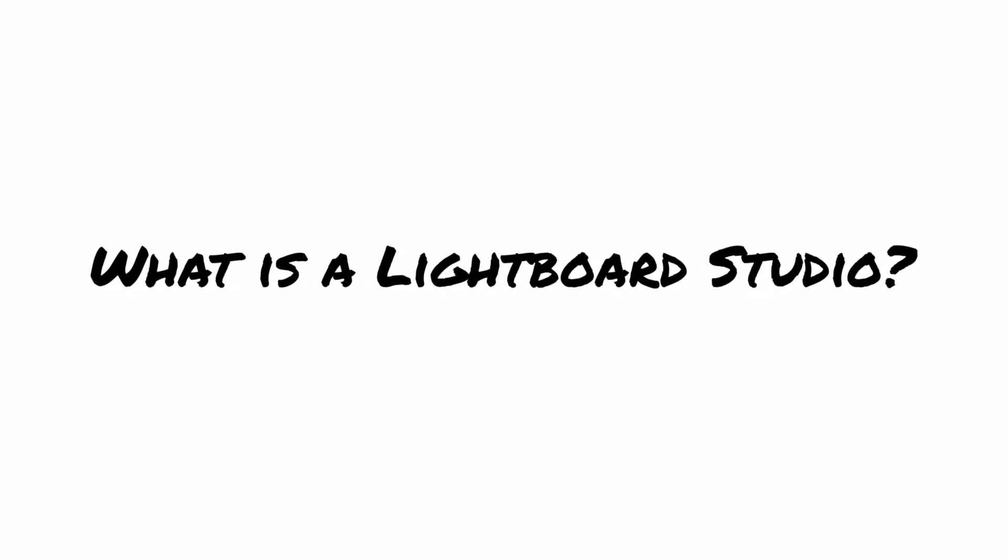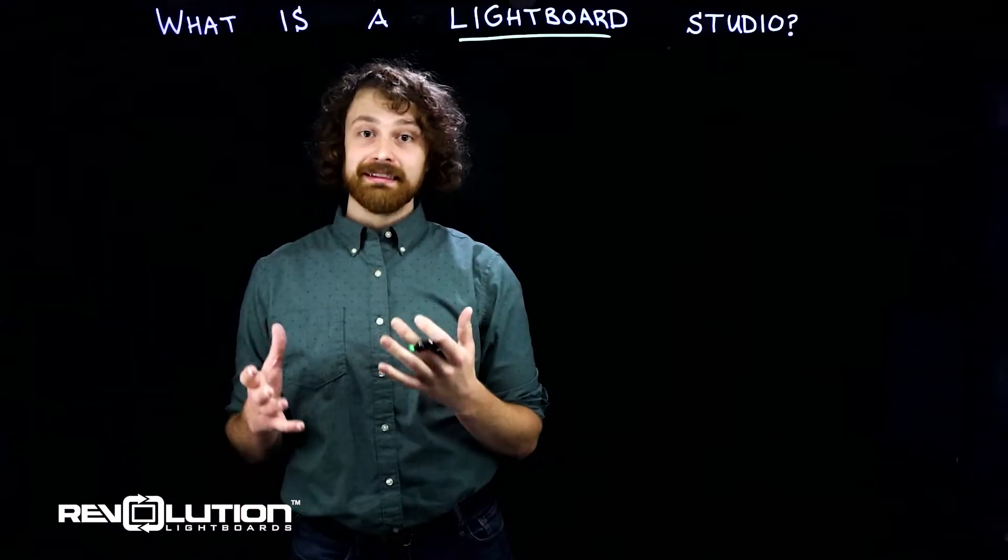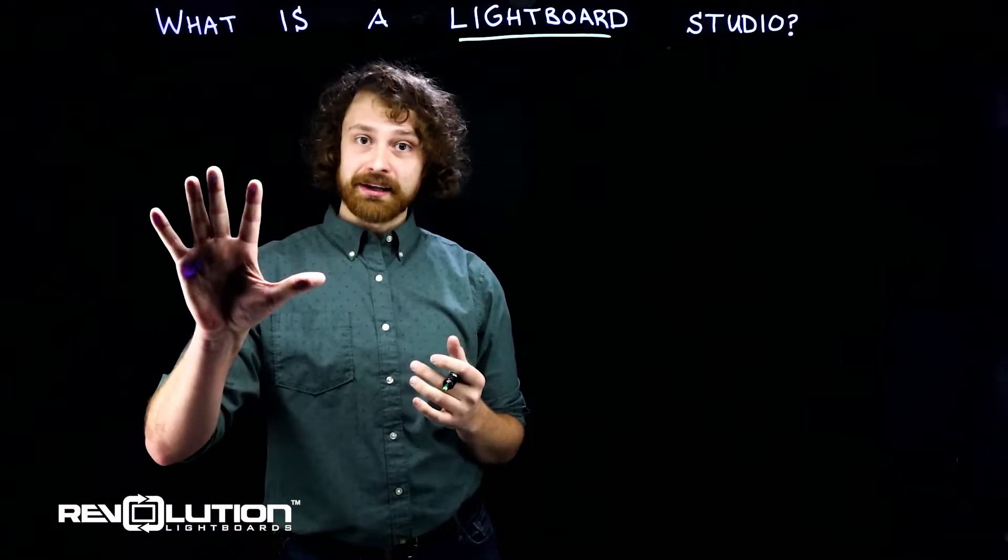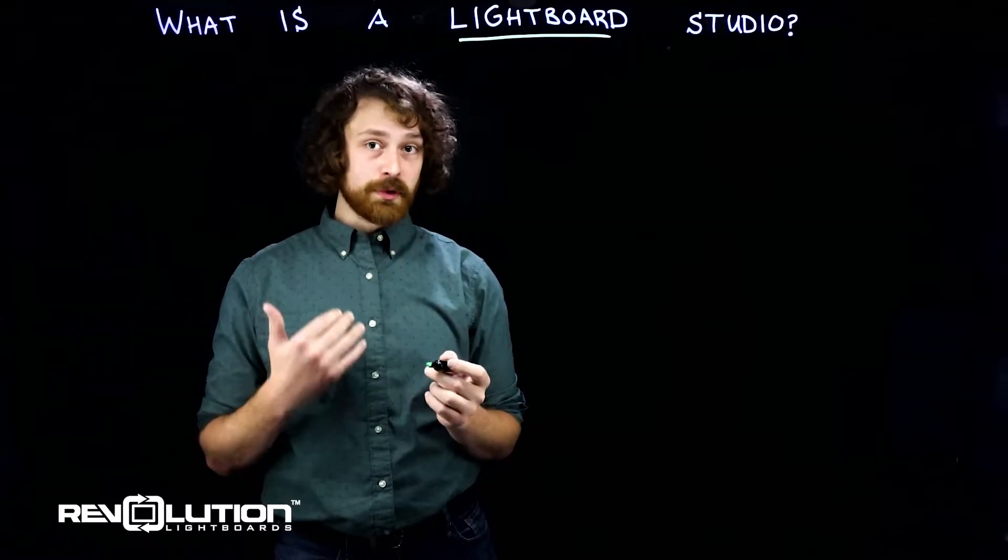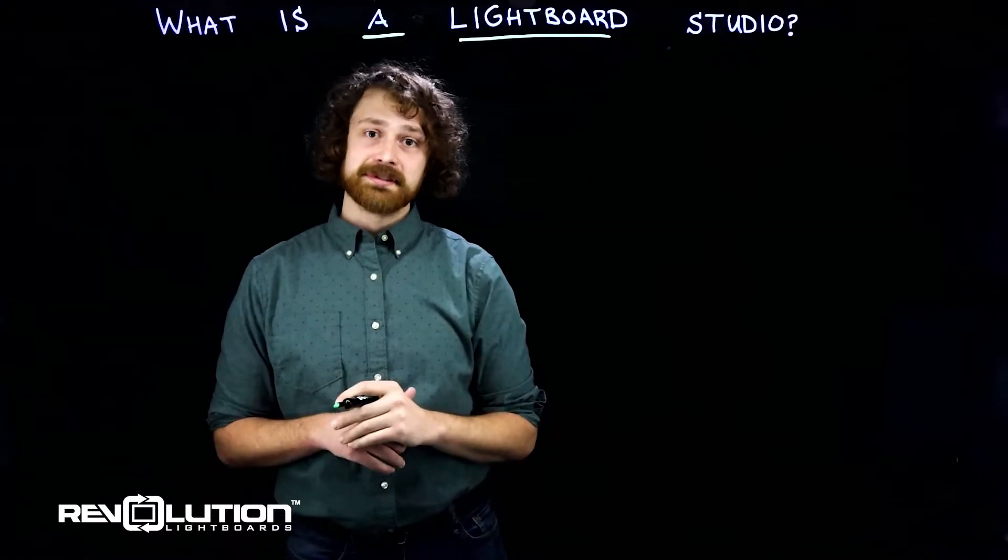What is a Revolution Lightboard Studio and how exactly do they work? Simply put, a lightboard is a transparent writing surface that allows a presenter to write on the board while making eye contact with their audience through a camera on the opposite side of the board.